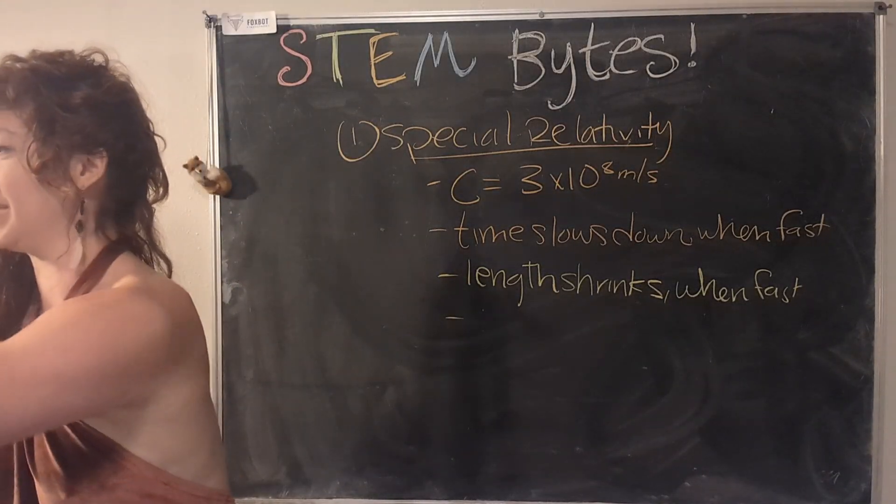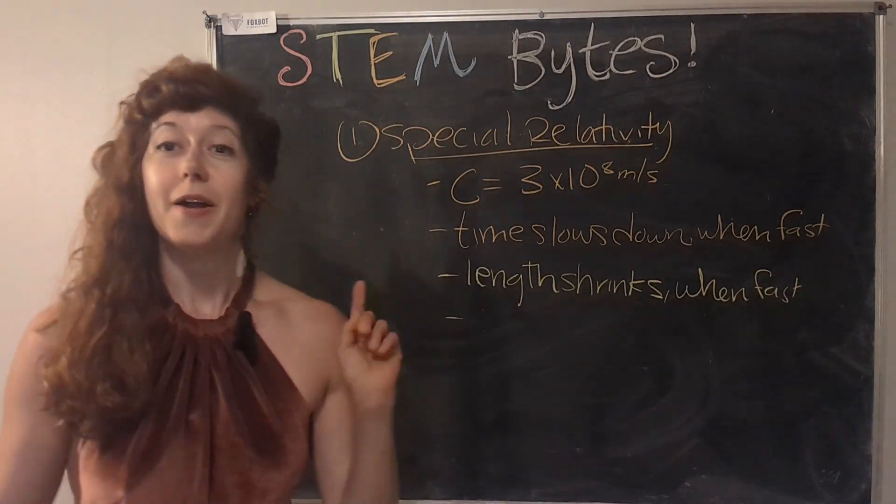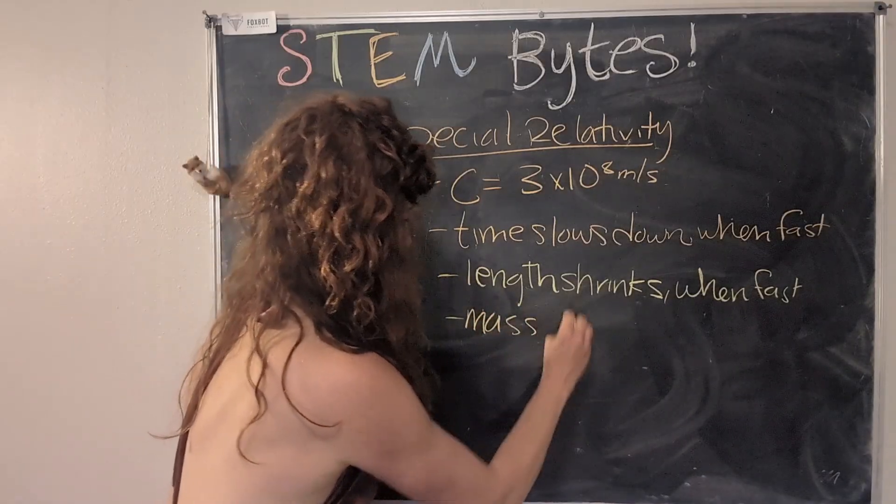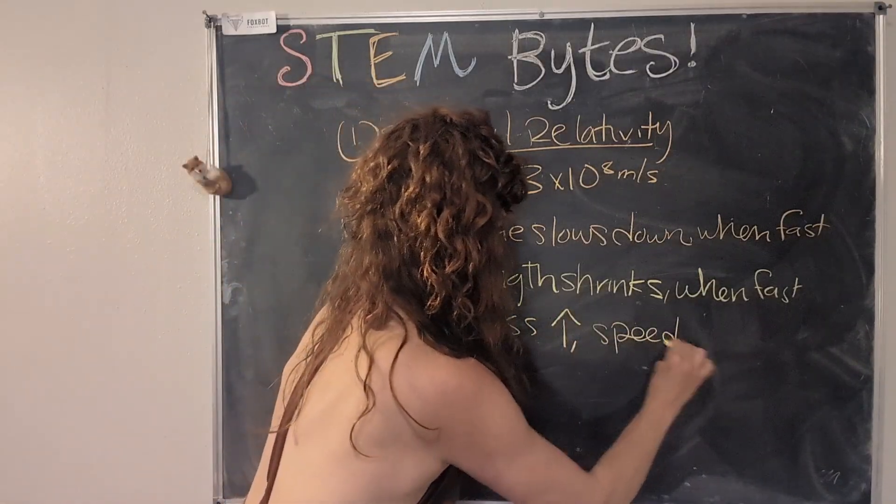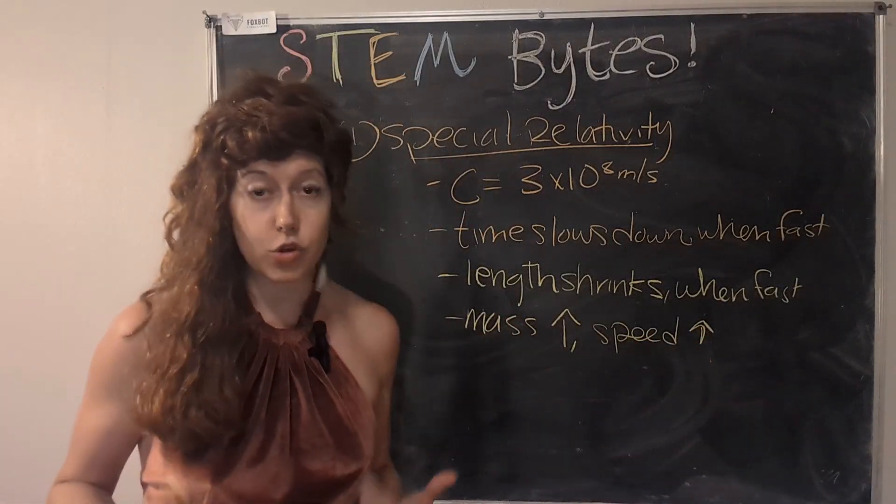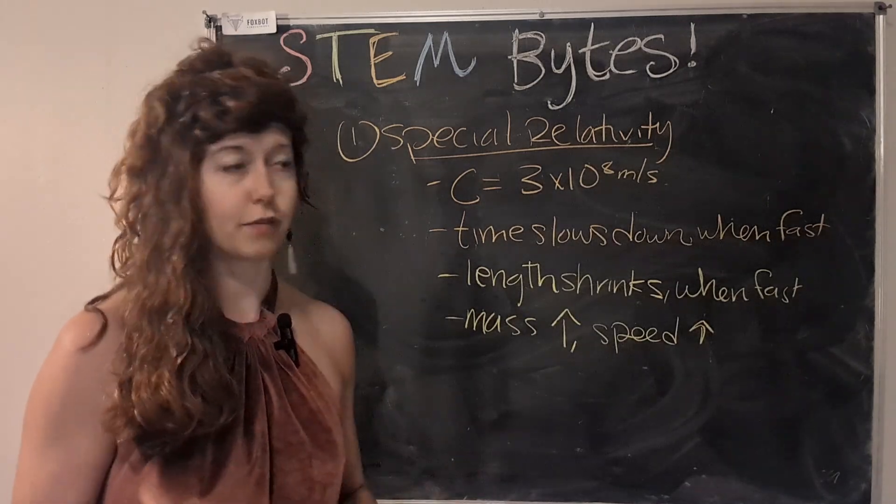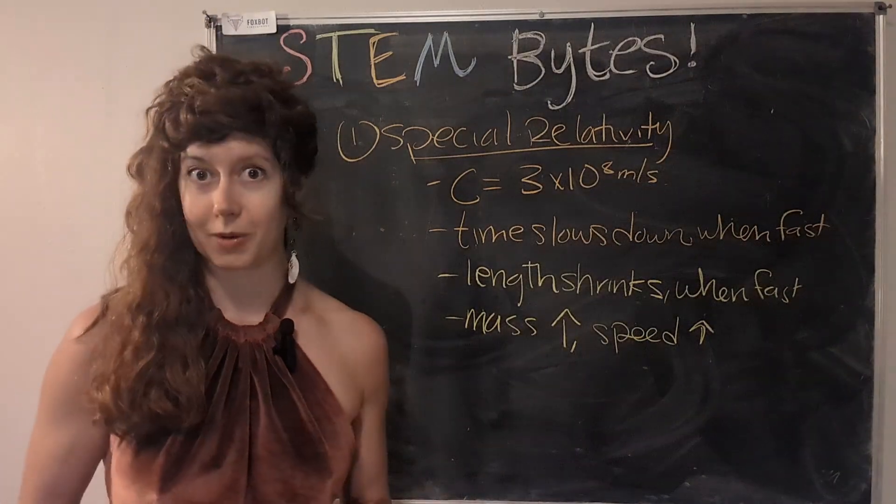And then the final one is that mass increases when speed increases. So this is actually pretty wild, too. So the faster you move, the more mass you have if you happen to stand on a scale. And we see this with particles as well as other objects.